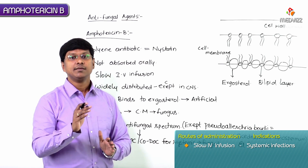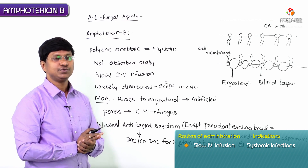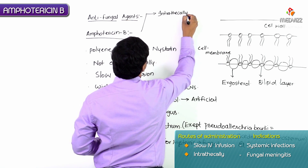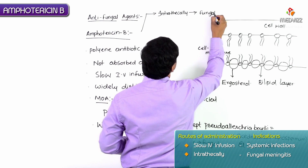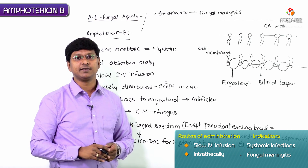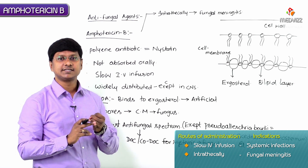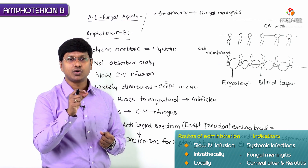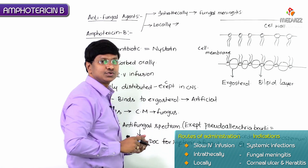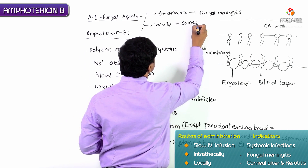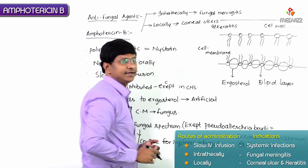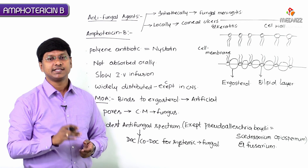The usual route of administration is intravenous. However, in the case of fungal meningitis, it can be used intrathecally. For corneal ulcers and keratitis, it can be used topically or applied locally directly into the eye.